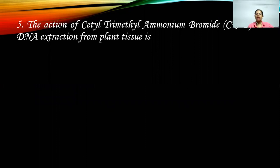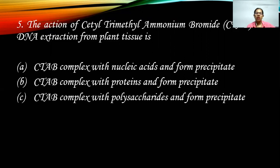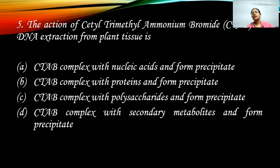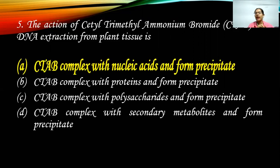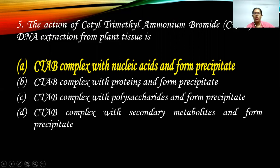Next: the action of CTAB — cetyltrimethylammonium bromide, a mild detergent — in plant tissue DNA extraction. It actually forms a complex with the nucleic acid and helps in precipitation, making DNA extraction easier. The other options include making a complex with proteins, polysaccharides, or secondary metabolites.